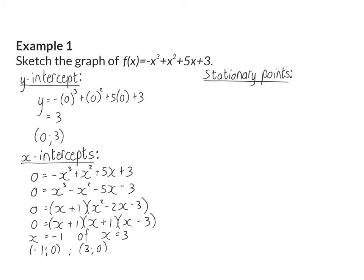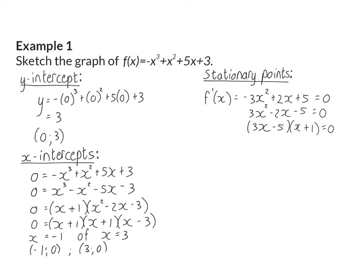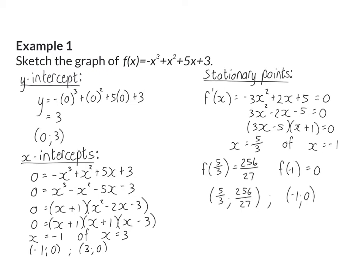Next we can determine our stationary points by taking the derivative and putting it equal to zero. This can be factorized and then we have two x values for our stationary points. Substituting these x values into our original function gives us the y values, and then we have our two stationary coordinates.